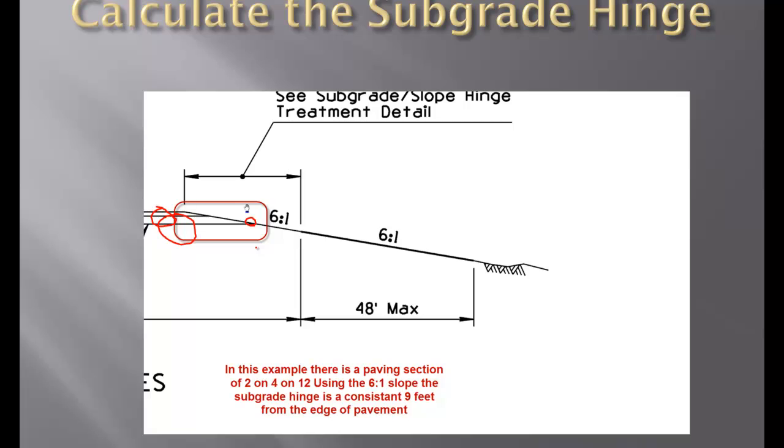If we use a 6 to 1 slope to calculate, all we've got to do is come over a constant 9 feet from the edge of pavement, and we are going to get the horizontal location of the subgrade hinge. The vertical location is easily done by dialing down to the top of dirt grade and carrying this out.